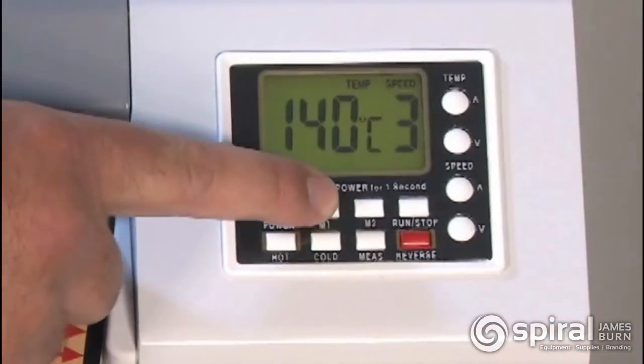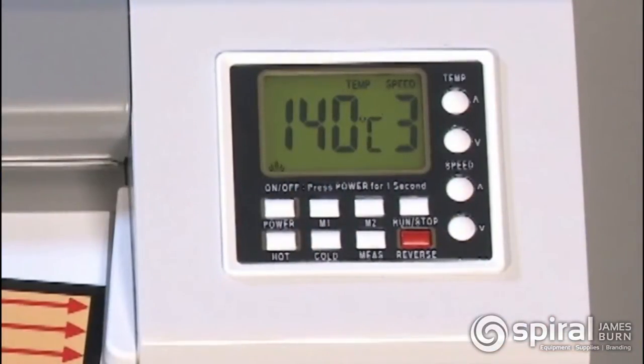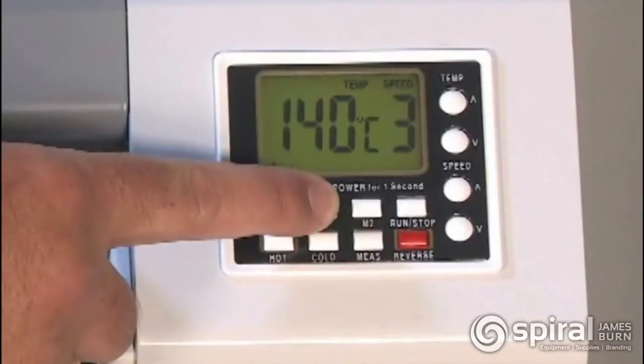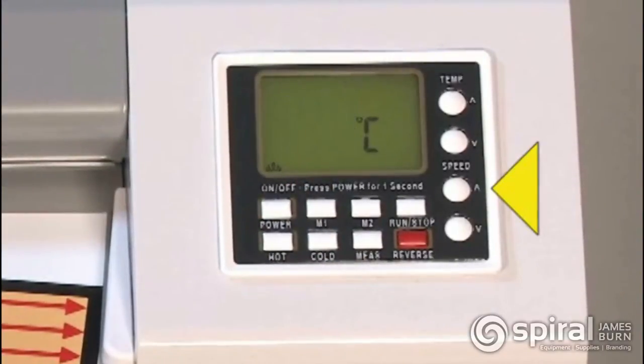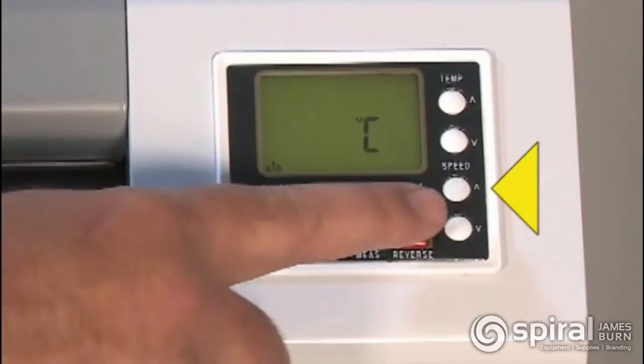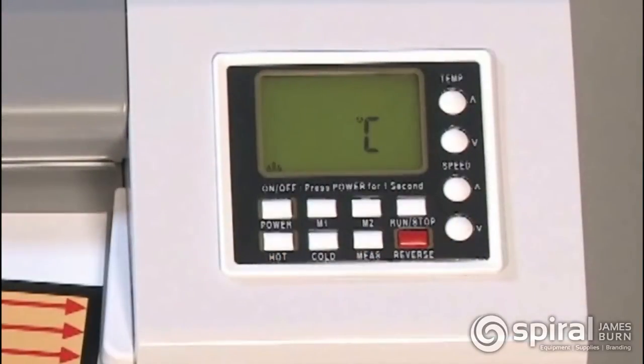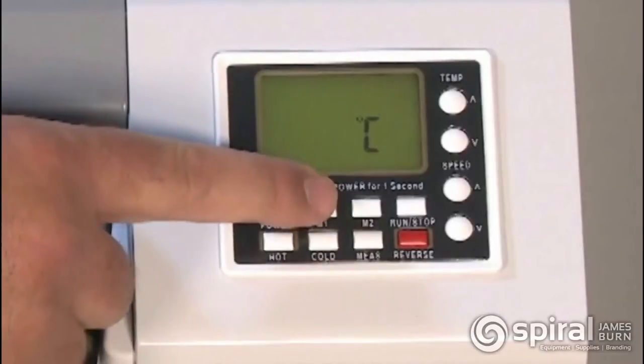Quickly press and release the M1 button, then check the display. Make sure temp equals 140 degrees Celsius and speed equals 3. If not, press and hold M1 until the numbers flash, then use the temp and speed up and down arrows to adjust the settings. Press M1 again to exit adjustment mode.